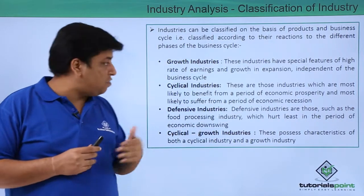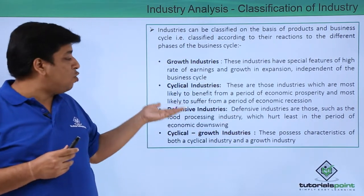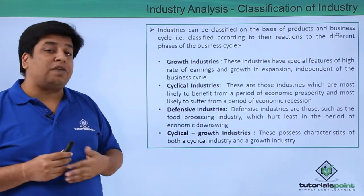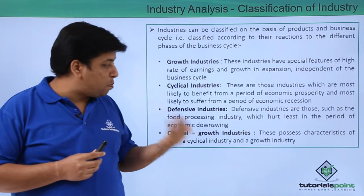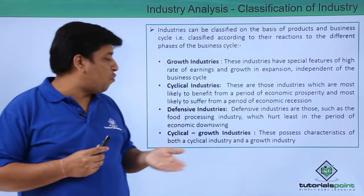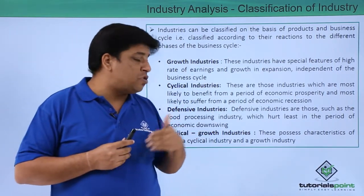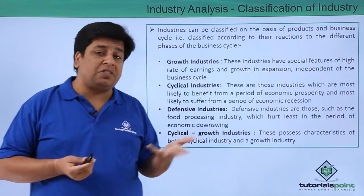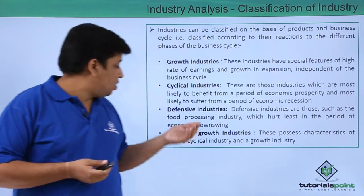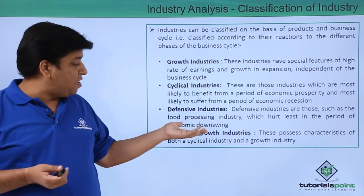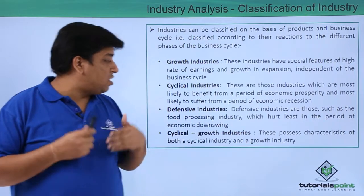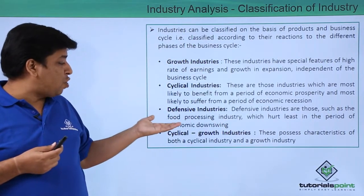Cyclical industries are those which are most likely to benefit from a period of economic prosperity and most likely to suffer from a period of economic recession. For example, the banking sector.